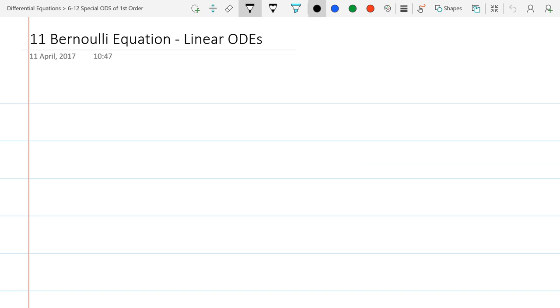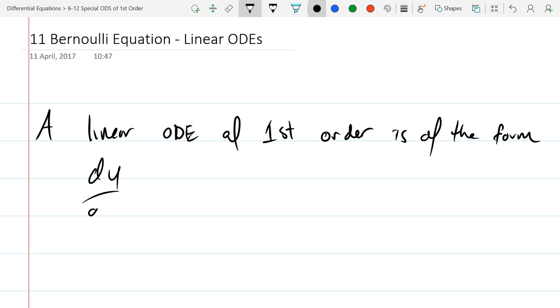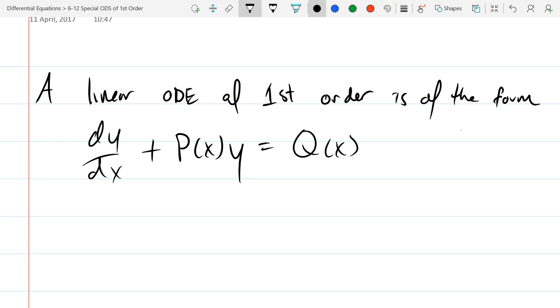So a linear ODE of first order is of the form dy over dx plus some function of x, p of x times y equals q of x. And I'm going to label this with an asterisk because we're going to refer back to it quite a bit.